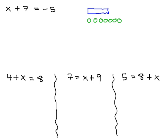And that is equal to negative 5. Let's represent negatives with these orange circles: 1, 2, 3, 4, 5. So x with 7 positive circles is the same as 5 negative circles.